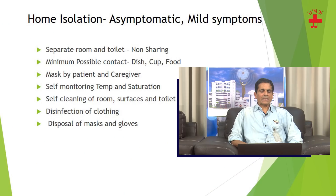Now, some information on home isolation for asymptomatic and mildly symptomatic patients. First, it must be done only with medical advice — you cannot do it on your own. Second, it must follow government guidelines. The government has provided guidelines through the Aarogya Setu app regarding who is eligible and what the rules are; they are available on the internet.